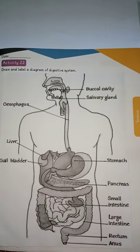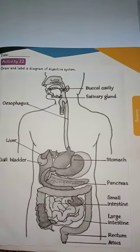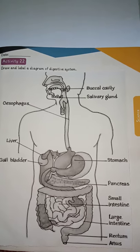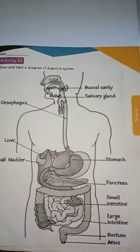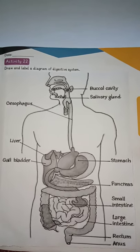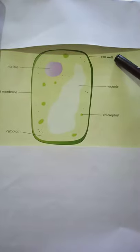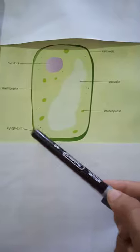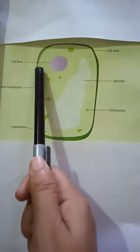Activity number 22 is to draw and label a diagram of the digestive system. This is a labeled diagram of a plant cell, showing the cell wall, large vacuole, chloroplast, cytoplasm, cell membrane, and nucleus. That's all for now, thank you.